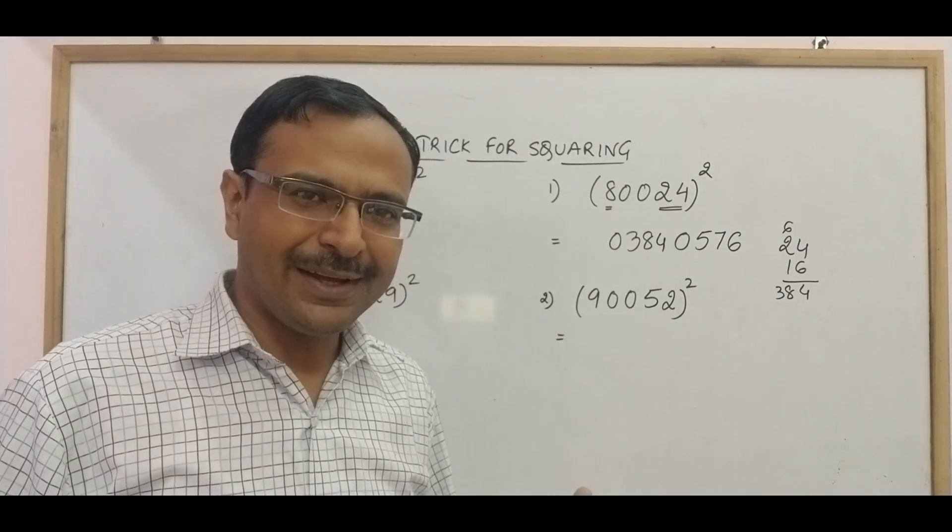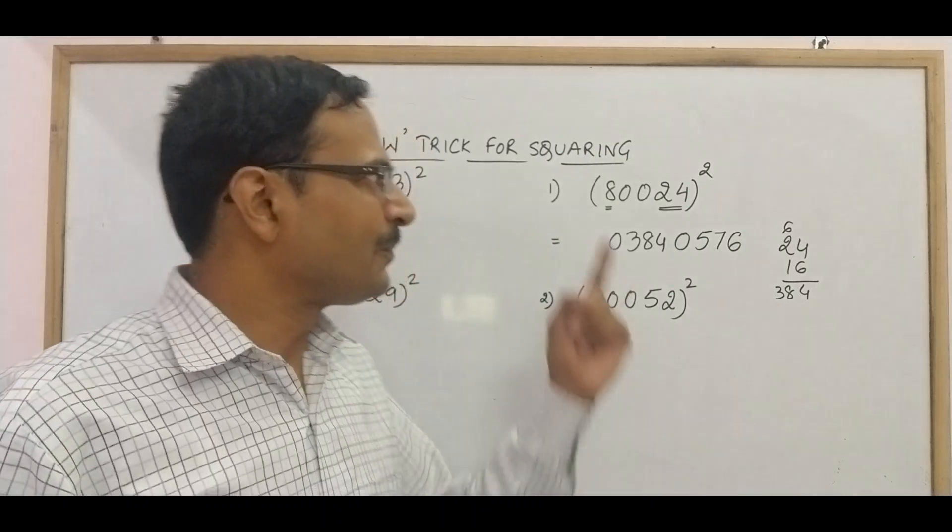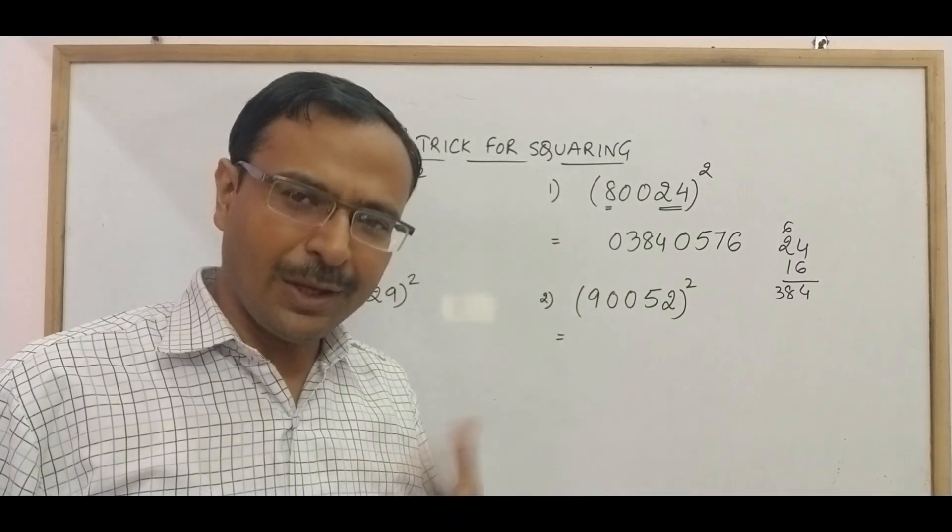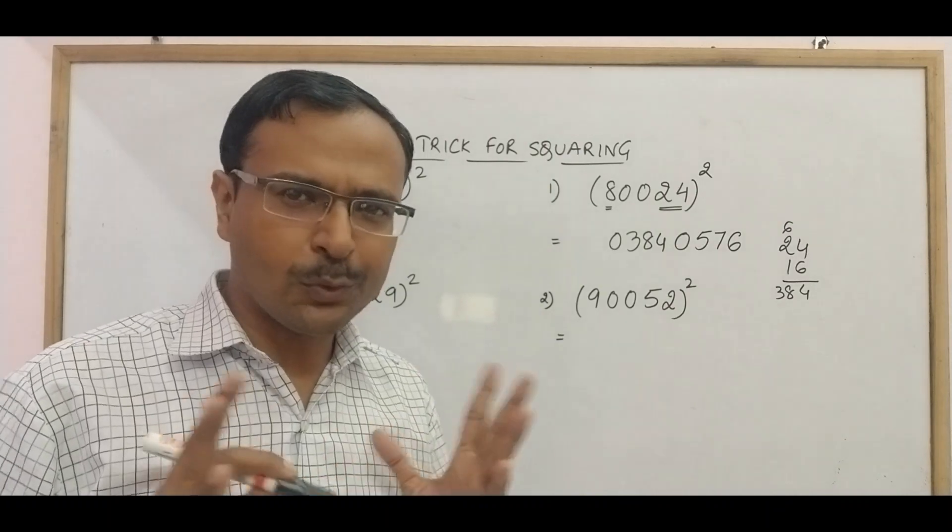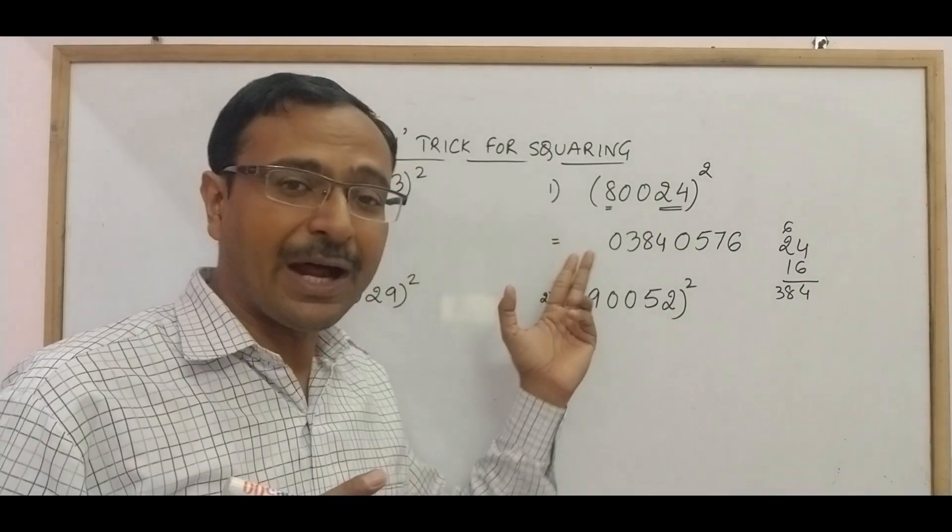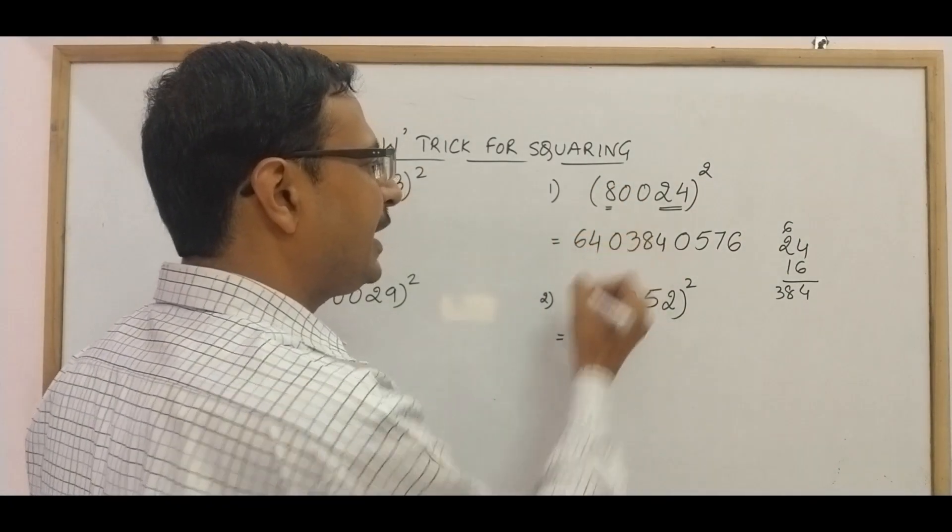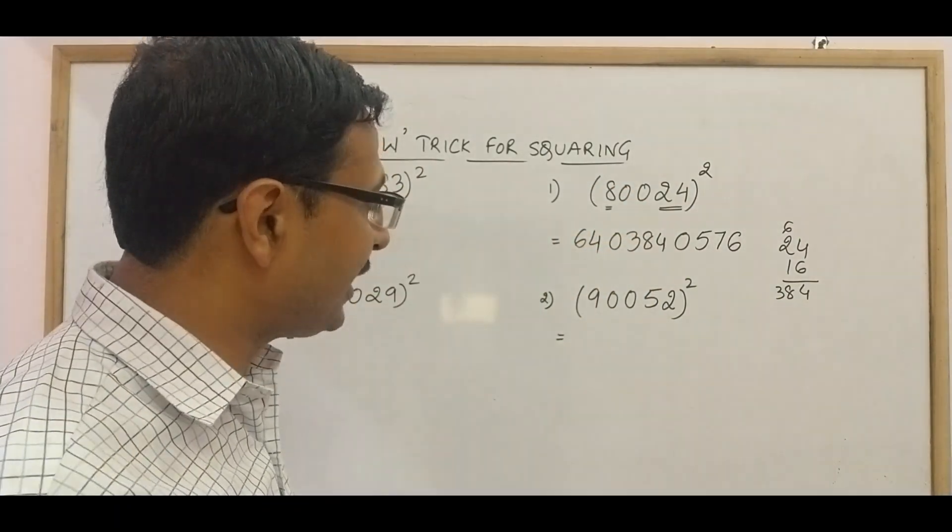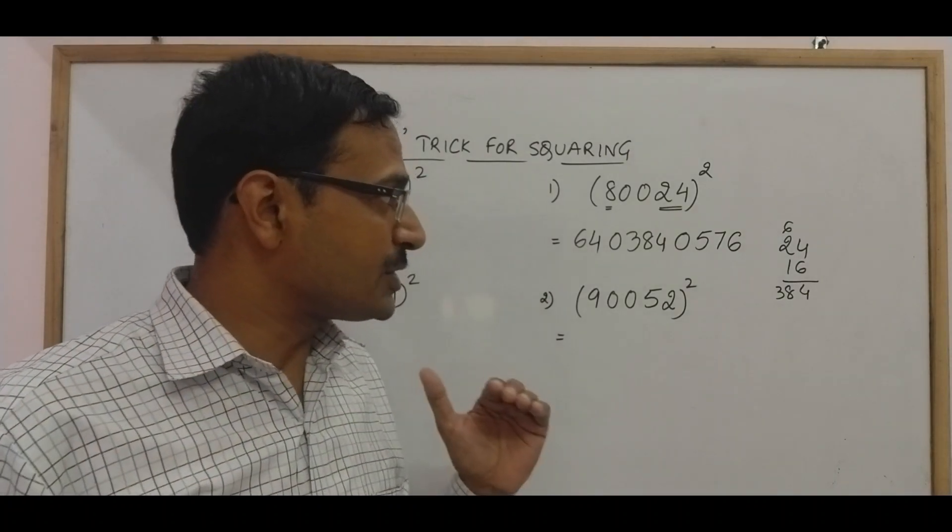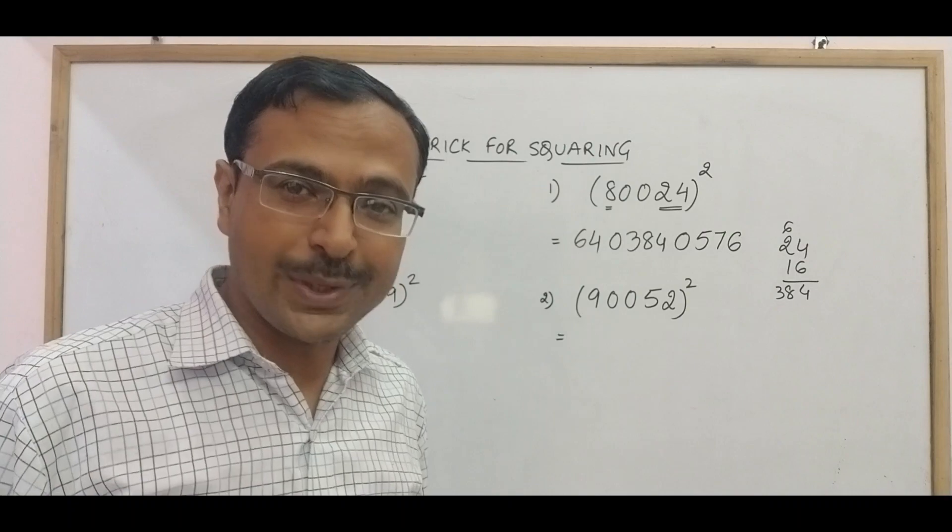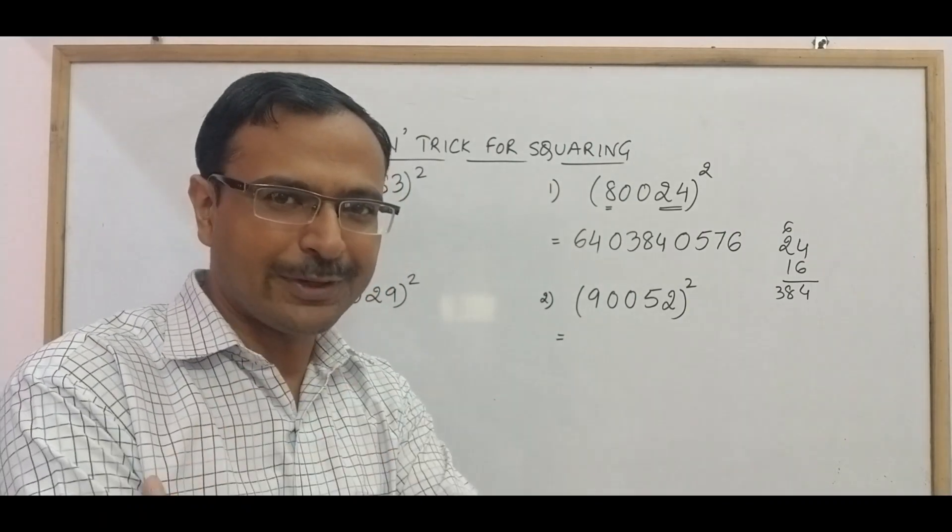And now next step will give us the answer, square of 8 is 64. Now it is a two digit number, but I do not want to prefix any more zeros because it will hardly make any difference. So 64 will come in the beginning and here is your answer of a ten digit number 6403840576 is the square of 80024 whole square. So how about that?